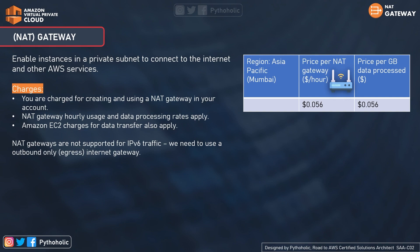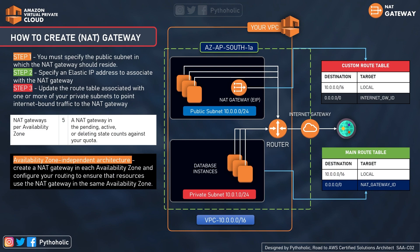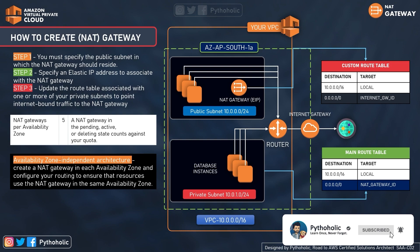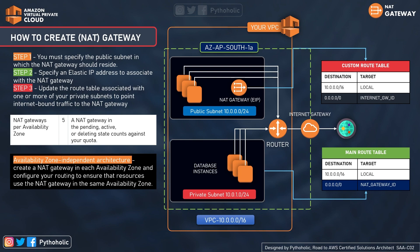NAT Gateways do not support IPv6 traffic — you need to use an outbound-only egress internet gateway for that. To create a NAT Gateway: step one, specify the public subnet where the NAT Gateway should reside, since it must be associated with the internet gateway; step two, specify an elastic IP address to associate with the NAT Gateway for IP masquerading; step three, update the route table for one or more private subnets to point internet-bound traffic to the NAT Gateway. You can have more than one NAT Gateway per availability zone, with a maximum quota of five per AZ.